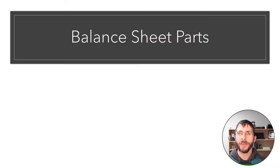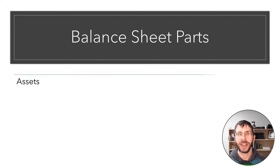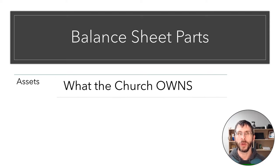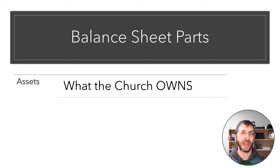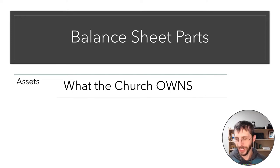Let's start off with what are the basic parts of the balance sheet. In your balance sheet, you're going to see assets. Assets are anything that the church owns. A lot of times we mainly worry about the checking, any investments, but it could also include the building, vehicle, land, musical equipment, or anything of that nature. Anything that the church owns can end up on the balance sheet as an asset.